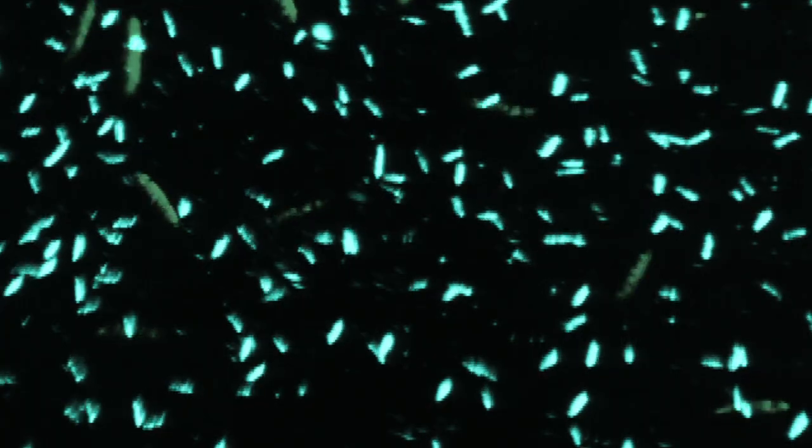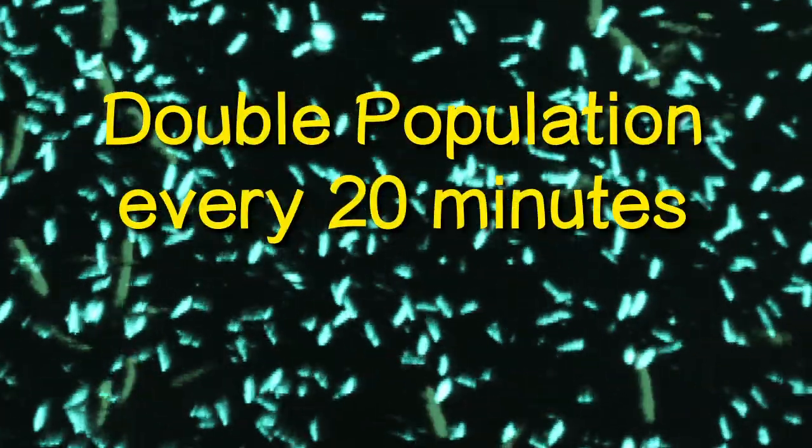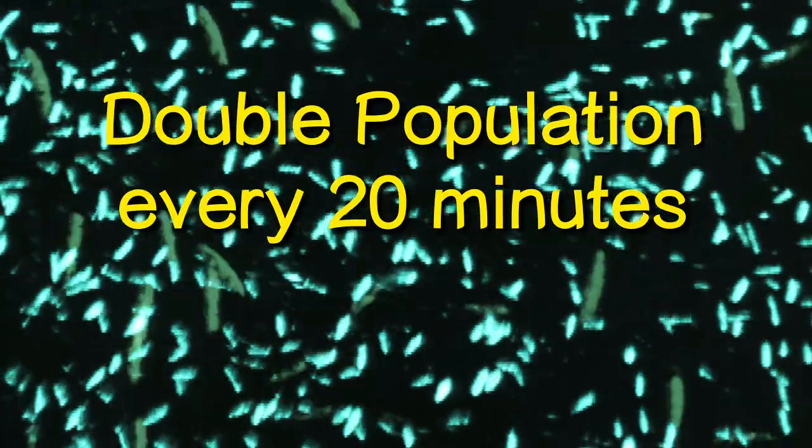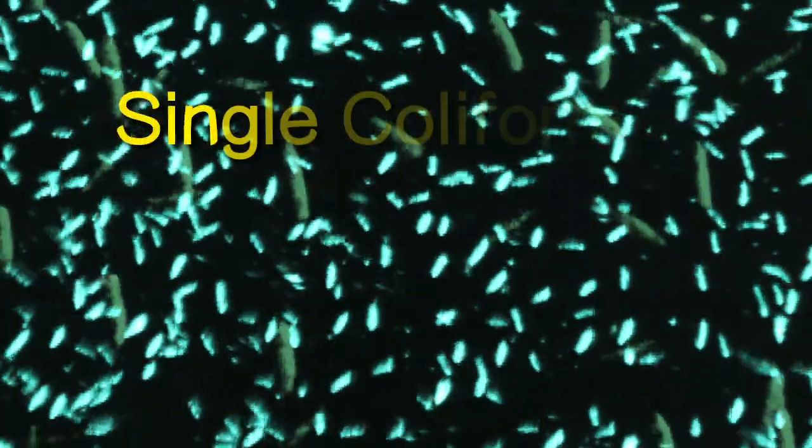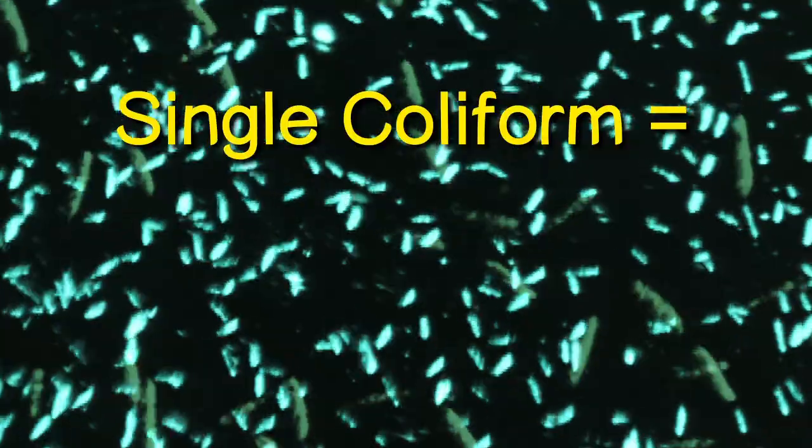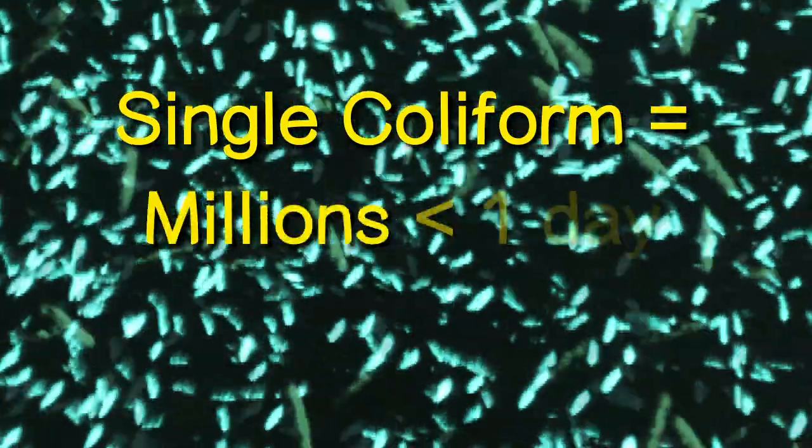In this environment, the bacteria will reproduce at a rate so as to double the population every 20 minutes. This means that a single coliform bacterium could give rise to a population of millions in less than a day.